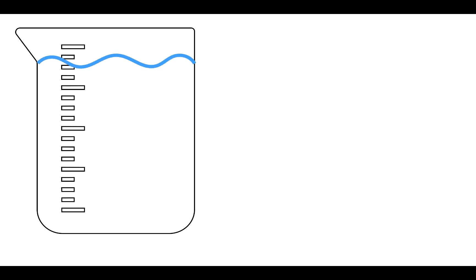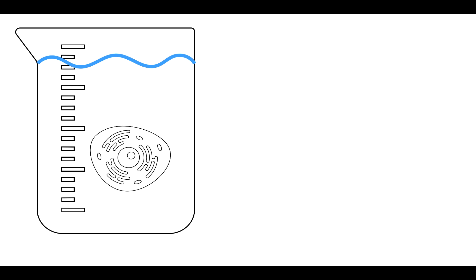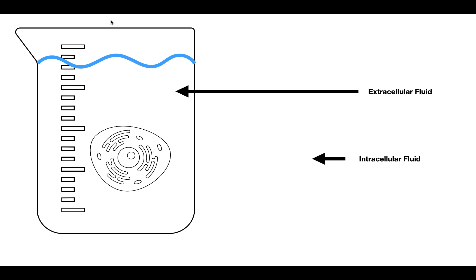So there are two main fluid compartments in our bodies. To understand that, let's use this setup: imagine we have a beaker with water inside it, and floating in the water we have a cell. There are two main fluid compartments in this setup. The first is the extracellular fluid — all of the water outside the cell.